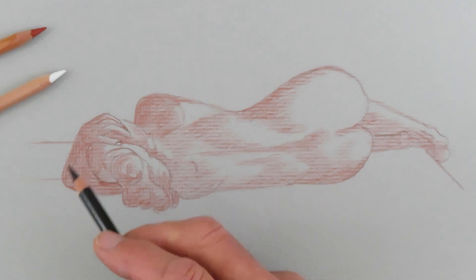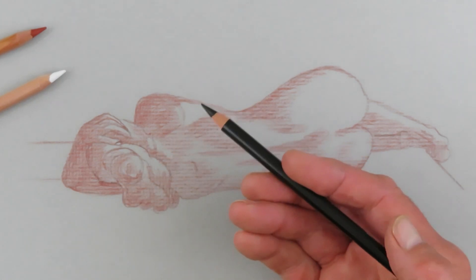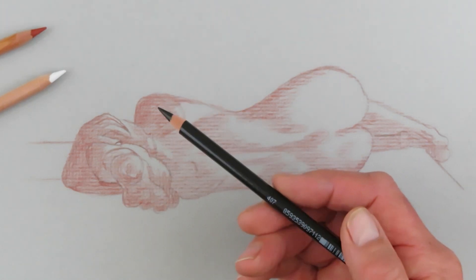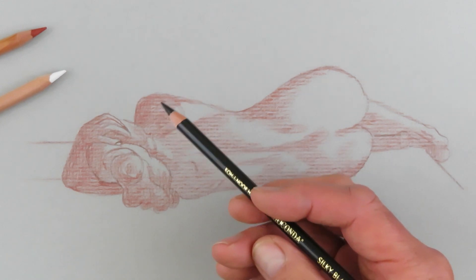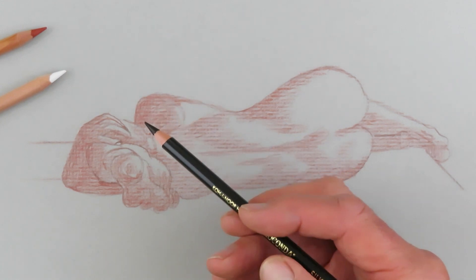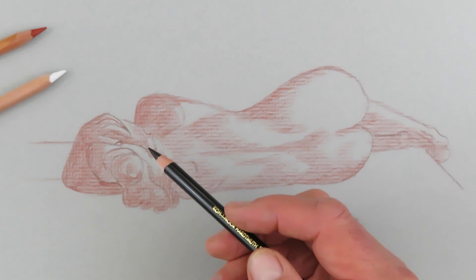The next step in the process is to shade in the darkest value areas with a carbon pencil. And for this one, I'm using the silky black number two, which is actually the medium value.